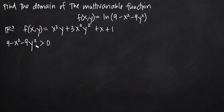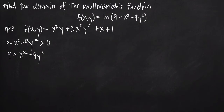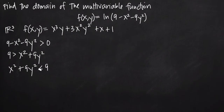Now we just need to simplify this a little bit. We add x squared and 9y squared to both sides to get 9 is greater than x squared plus 9y squared. Flipping that around, x squared plus 9y squared is less than 9. Then dividing through by 9, we get x squared over 9 plus y squared is less than 1.